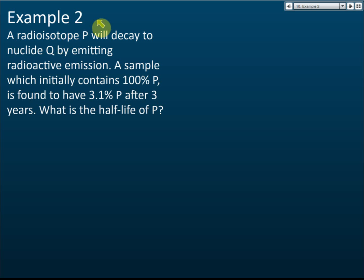For Example 2, I would like you to do it by yourself. A radioisotope P will decay to nuclei Q by emitting radioactive emissions. A sample which initially contains 100% P, after 3 years it becomes 3.1%. What's the half-life? Use your common sense to find the half-life.